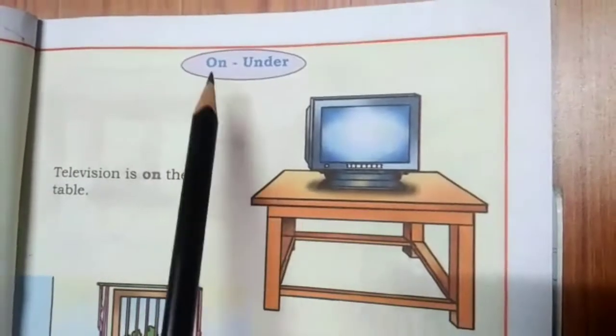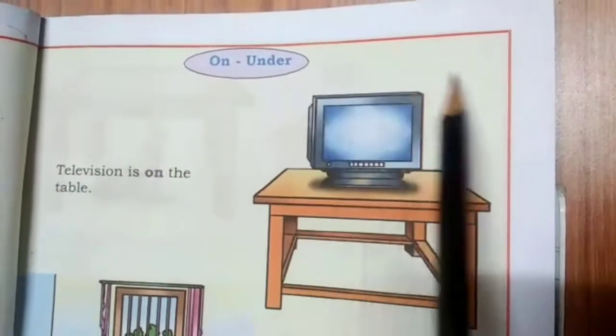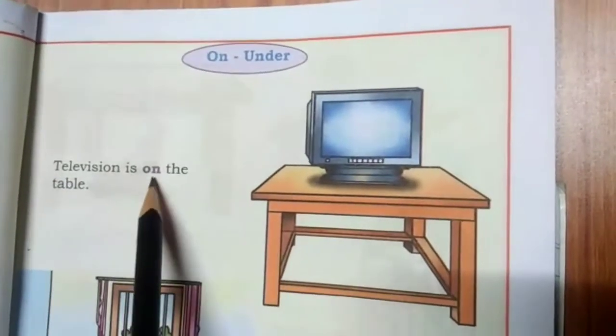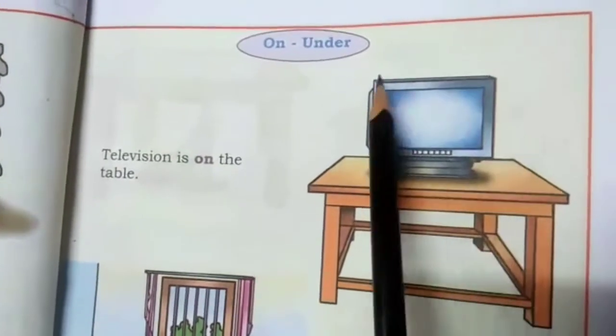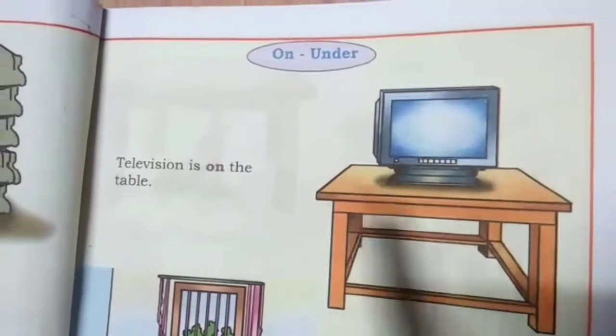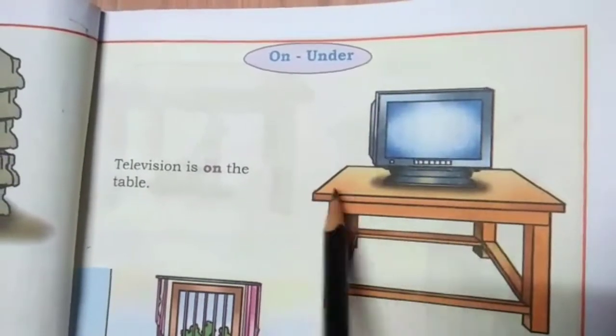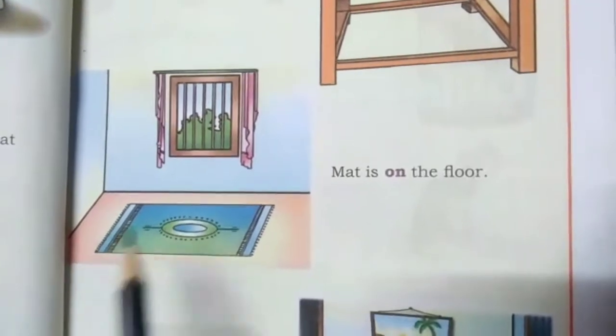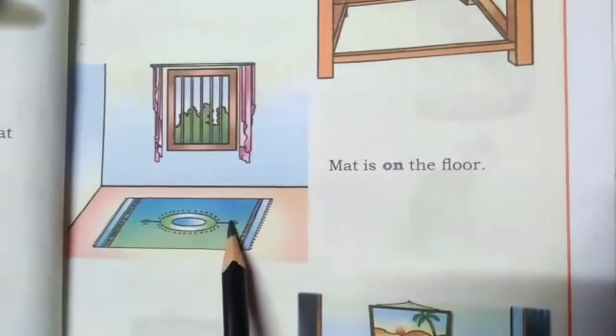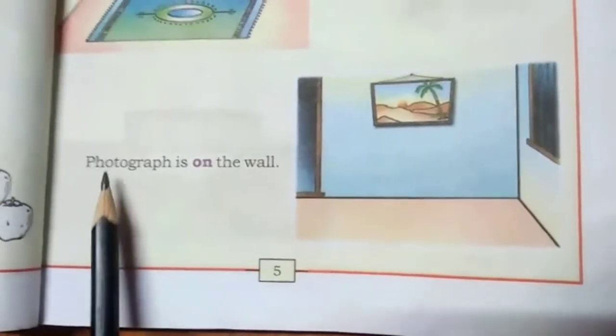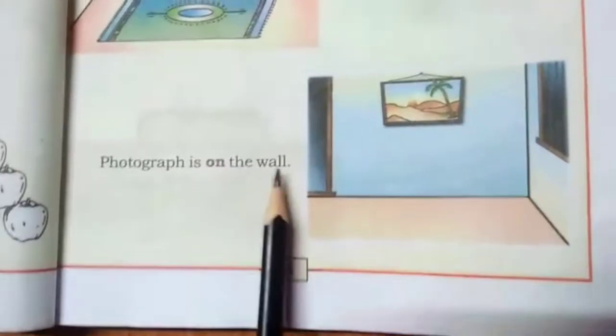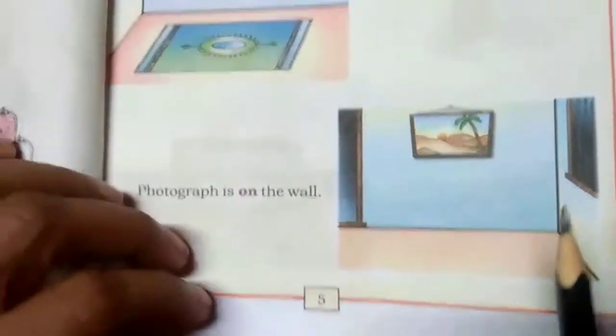Next we are coming up with 'on' and 'under.' See the picture — the television is on the table. Where is the TV kept? It is kept on the table. Next picture: the mat is on the floor. Next: a photograph is hanging on the wall. The photograph is on the wall.